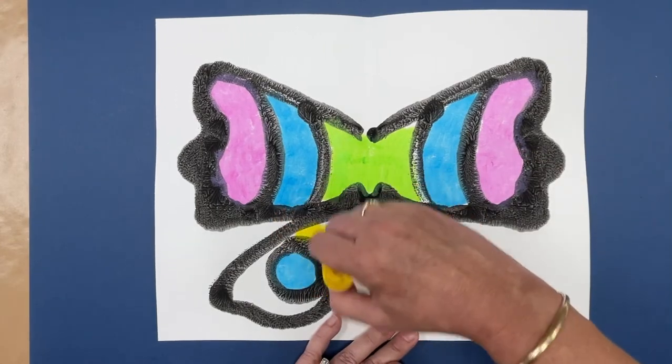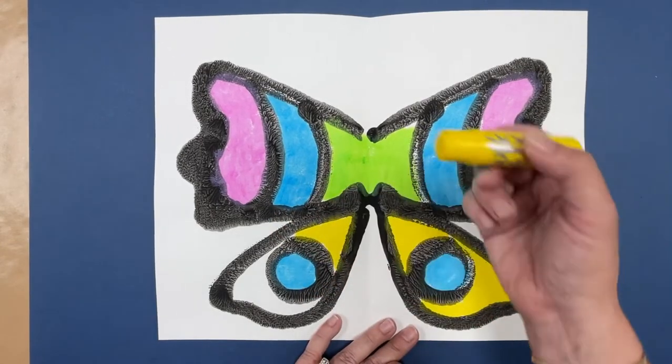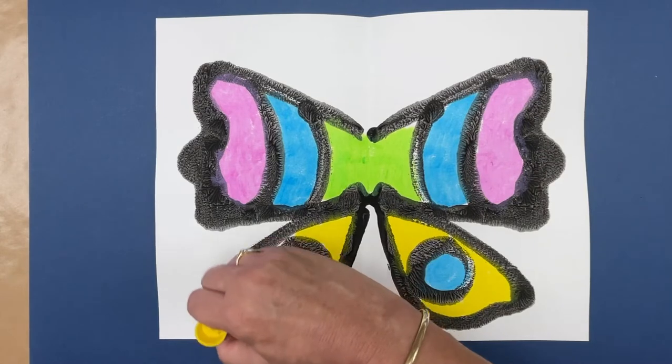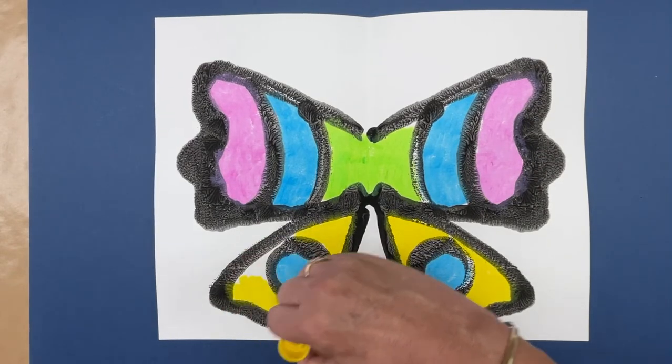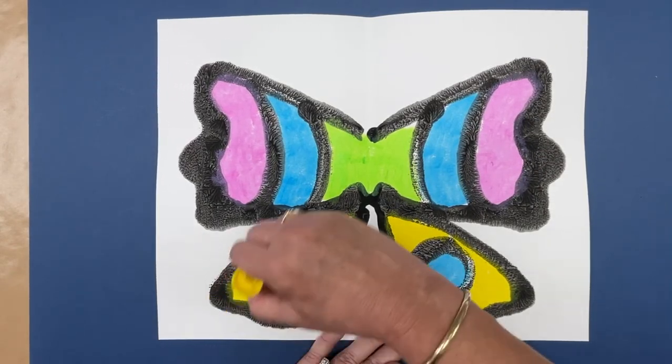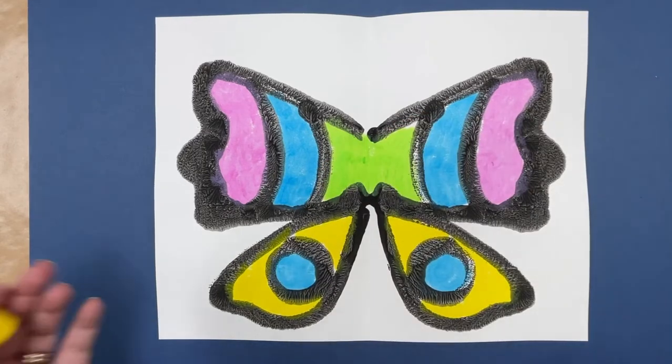So remember I have to do the same thing on the other side. I'm not putting my hand down in what I'm coloring either because it will smudge and smear. So you have to hold your hand up. All right so there's my butterfly.